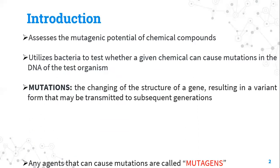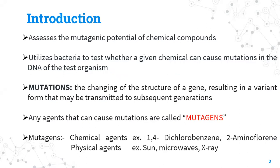The Ames test is one of the biological assays that will assess the mutagenic potential of a chemical compound. We basically utilize a bacteria to check whether a given chemical can cause mutation in the DNA of that organism. Mutation is basically the change in structure of a gene which will lead to its variant form, and that variant form can be transmitted to subsequent generations.